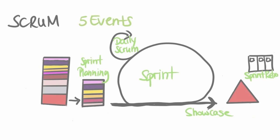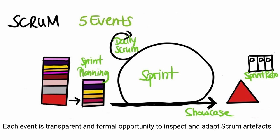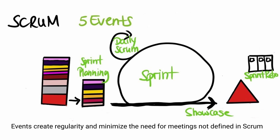Scrum Events. There are five events in Scrum. The first is the Sprint, which is a container for all the other events. Each event is a formal opportunity to inspect and adapt Scrum artefacts, specifically designed to enable the transparency required. Events are used in Scrum to create regularity and to minimise the need for meetings not defined in Scrum, and should not be seen as additional meetings to overload the team. Optimally, all events are held at the same time and place to reduce complexity.